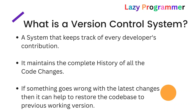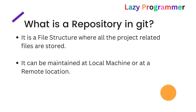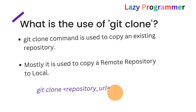Now let's move to the second question: what is a repository in Git? A repository is nothing but a file structure where all the project-related files are stored — you can say it's a folder on your local system. It can be maintained on a local machine or at a remote location as well. While developing code you maintain the repository locally, but once the feature is developed you push those changes to a remote location.